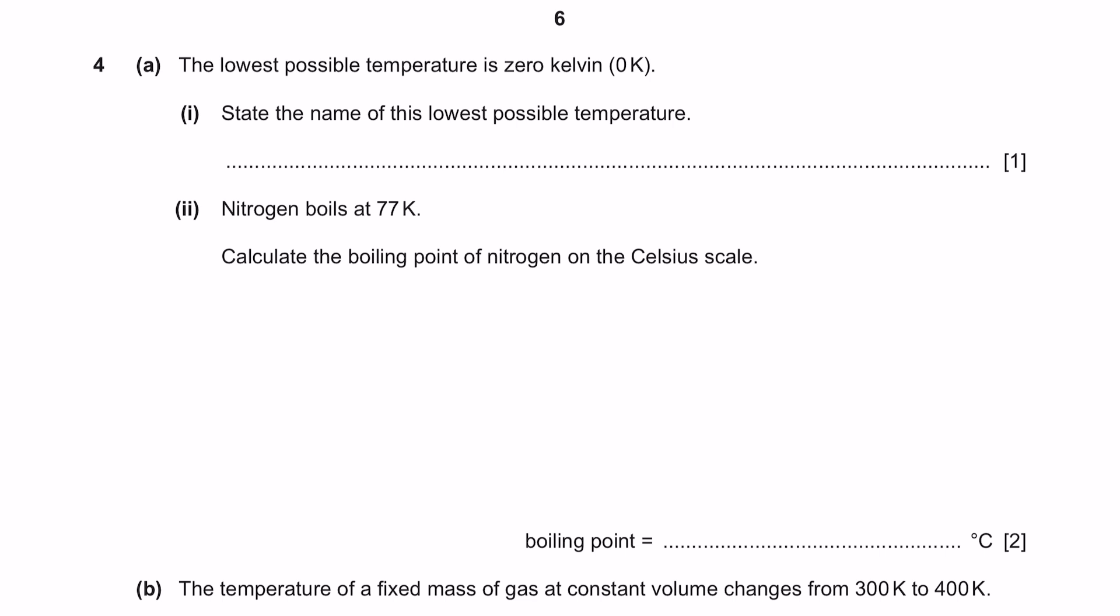Question 4 Part A. The lowest possible temperature is 0 Kelvin. Part 1: State the name of this lowest possible temperature. The term we use for this is absolute zero. This is something that you should learn from your Chapter 2 Thermal Physics.